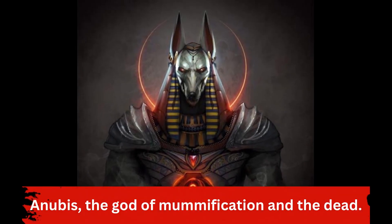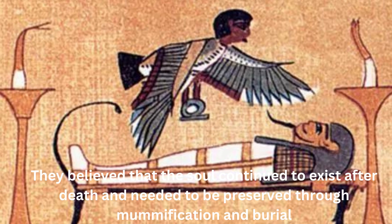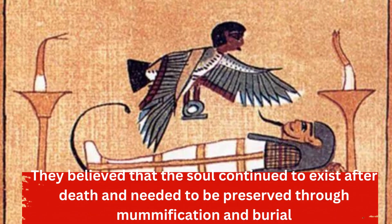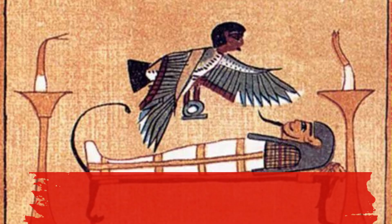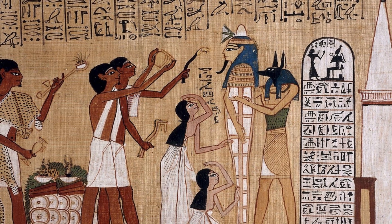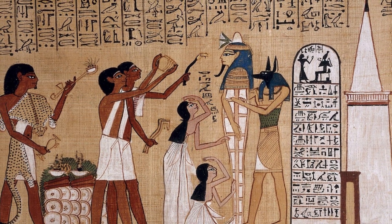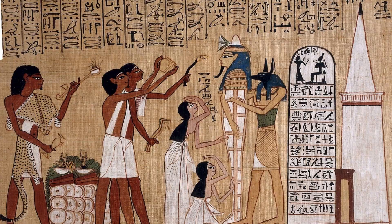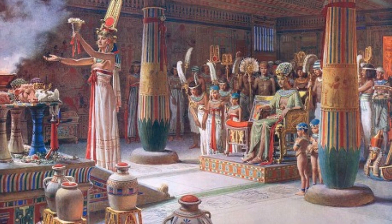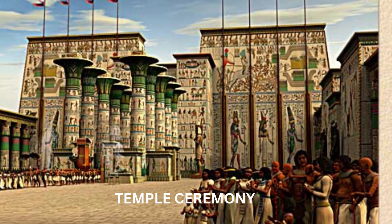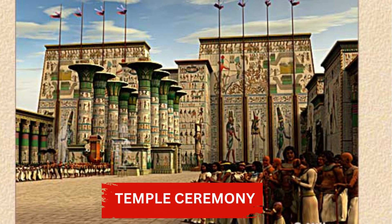The ancient Egyptians also believed in the importance of death and the afterlife. They believed that the soul continued to exist after death and needed to be preserved through mummification and burial. This was why tombs and pyramids were constructed for the pharaohs and other important people, as well as for their accompanying funerary objects and offerings. The ancient Egyptians had a variety of rituals performed as part of their religious practices, including temple ceremonies, funerary rituals, and daily offerings.